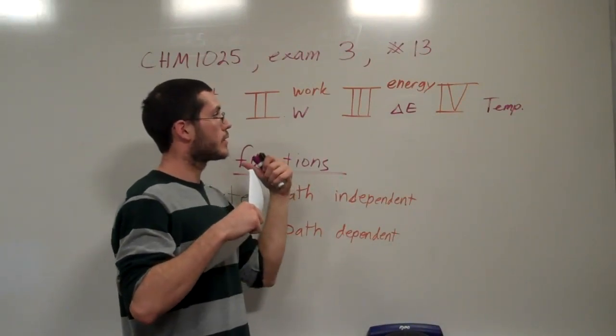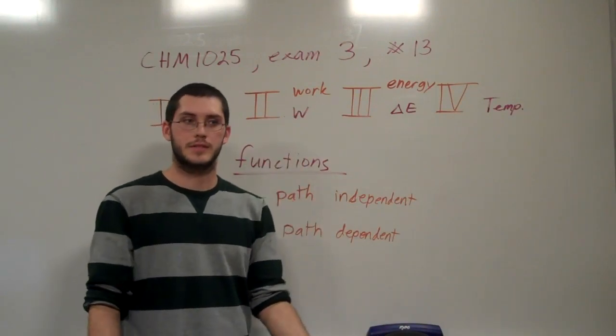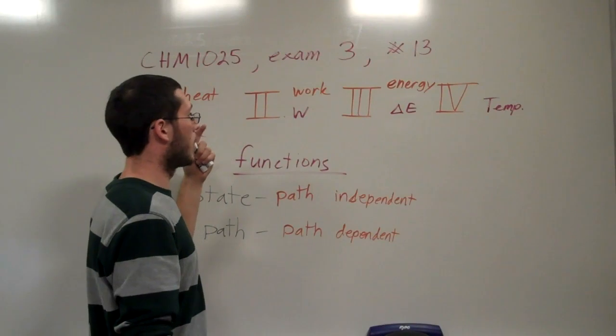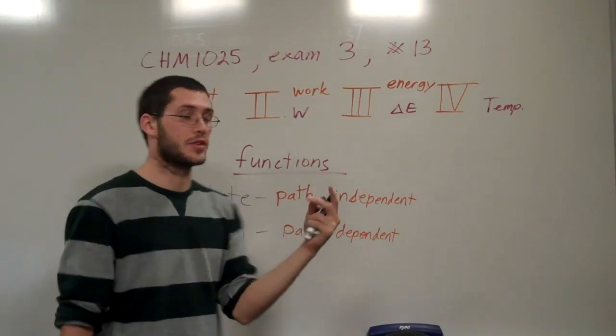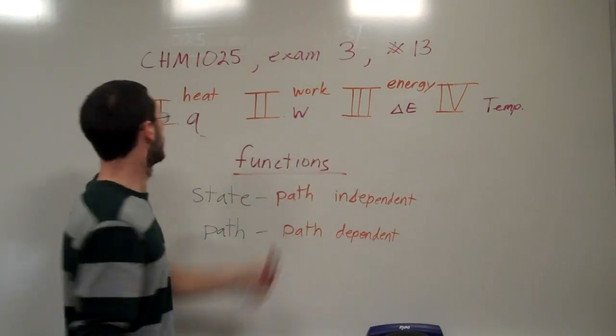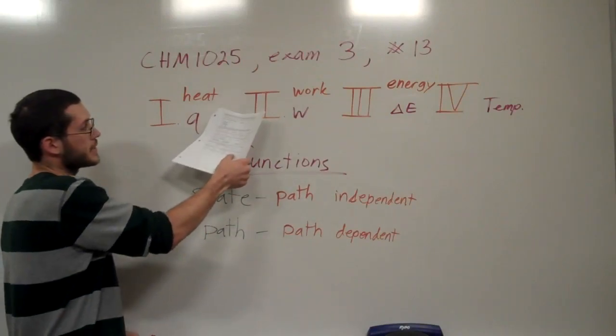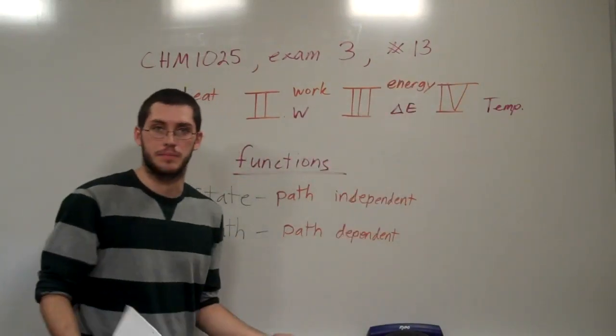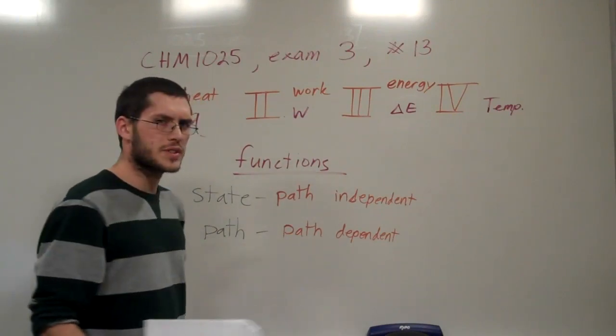So, if we want to get full credit for this, if we want to get the right answer, we have to know what a state function is, and then we have to know what these symbols mean. Now, I have up here, Q is the heat, W is work, delta E is energy of a system. Well, what is a state function?